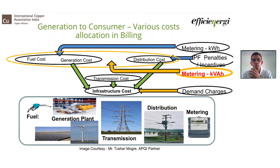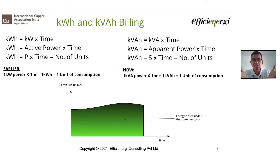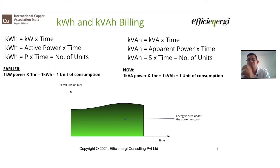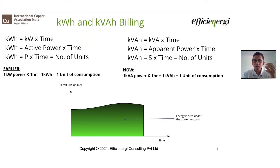KVH billing is now subsuming both your KWH metering components and the power factor penalties/incentives that covered distribution costs. Looking at it simply: KWH is KW multiplied by time — one kilowatt consumed for one hour equals one unit of KWH. With KVH, it becomes KVA multiplied by time — one KVA for one hour equals one unit of KVH. That's the basic difference between KWH and KVH.